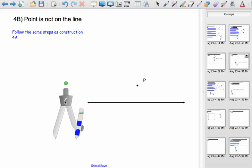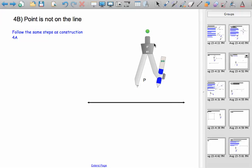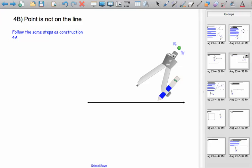You actually follow the same steps. Remember from the last construction, you put your compass on P, and then using any convenient arc length, let's make it a little longer, we're going to draw two arcs that intersect this line at two points.